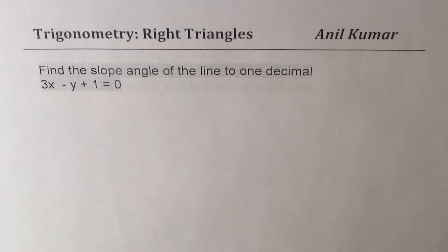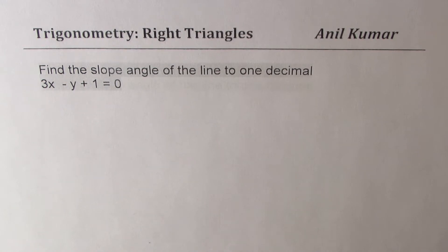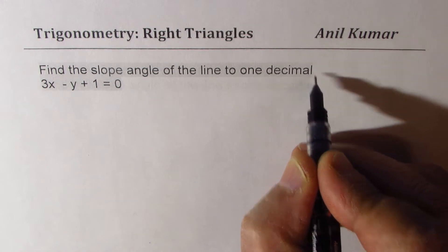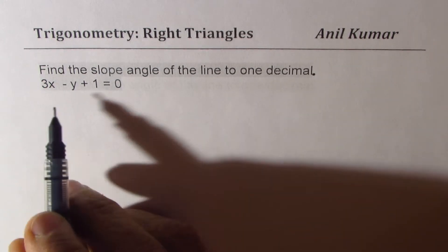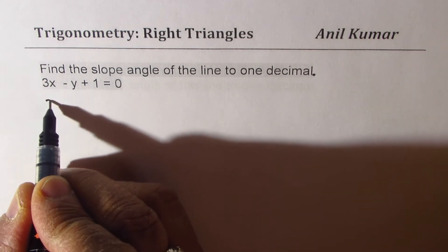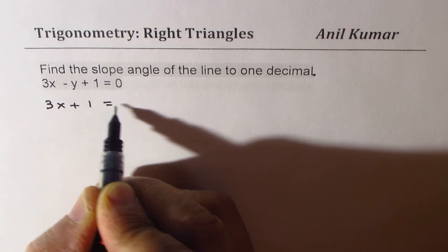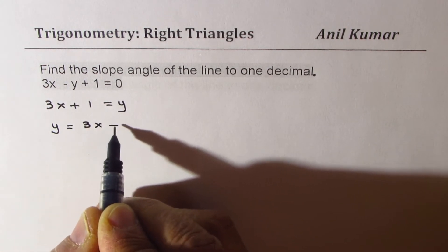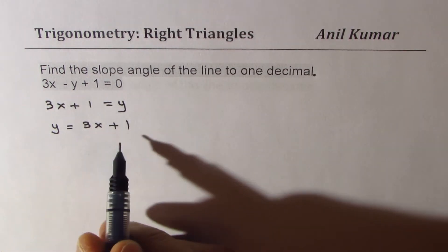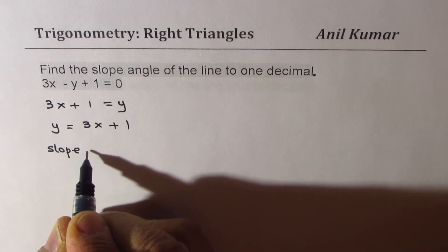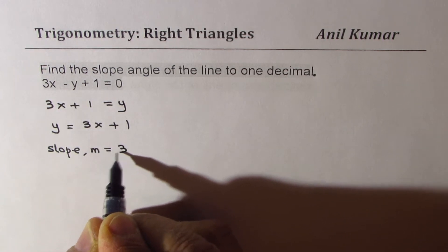Let's begin with the very first question. Find the slope angle of the line to one decimal place. The equation for us is 3x minus y plus 1 equals 0. Let's rearrange, so we get 3x plus 1 equals y, or you could write y equals 3x plus 1. If you compare with the standard equation of line, you know that the slope m is equal to 3.